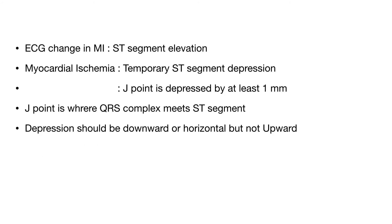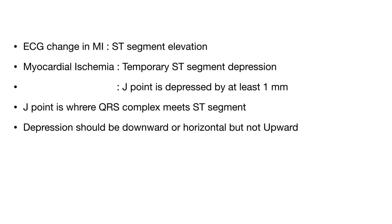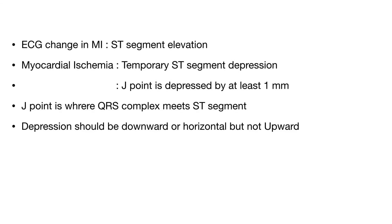Comparing ischemia with infarction: when a coronary vessel is completely blocked causing an infarct, ECG shows ST elevation in leads facing the infarcted area, whereas in acute myocardial ischemia ECG shows temporary ST depression. Acute myocardial ischemia is also seen during a stress or exercise test — a positive stress test shows ST depression in leads facing the ischemic area, most prominently in V5 and V6. The diagnostic criteria require the J-point to be depressed by at least 1 mm, and the depressed ST segment should be horizontal or downward sloping, not upward sloping.